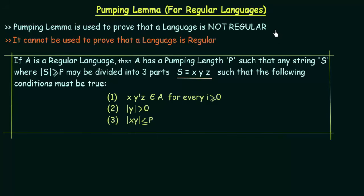I have already taught you in previous lectures what are regular languages and what are non-regular languages. Regular languages are the languages that can be represented or designed using a finite state machine. All regular languages can be designed using finite state machines. And we know the properties of finite state machines and we also know their limitations. Due to their limitations there are some languages that cannot be designed using finite state machines, and those languages are known as non-regular languages.